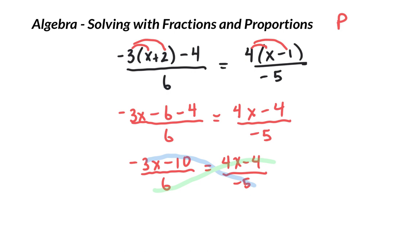So, if I multiply that negative 5 times negative 3, I get positive 15x. Negative 5 times negative 10 is a positive 50. And then I multiply 6 by 4x. And by negative 4.